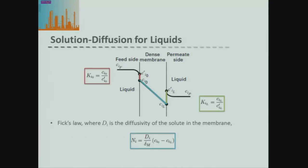If we now start to build our model across our whole membrane, we have our partition coefficient on the feed side for the absorption. We can also write an identical partition coefficient on our permeate side for the desorption — the concentration of the absorbed material divided by the concentration of the desorbed material. We can represent the transport through the dense membrane in terms of Fick's law: the diffusivity divided by the thickness of the membrane, times the concentration of the absorbed concentrations on the feed side to the permeate side.